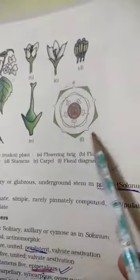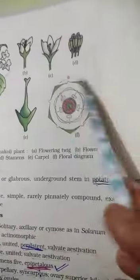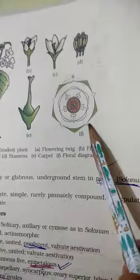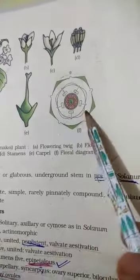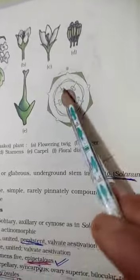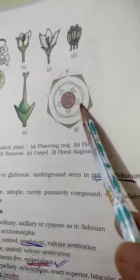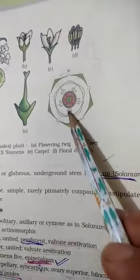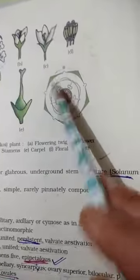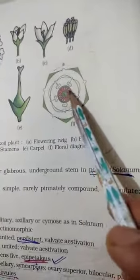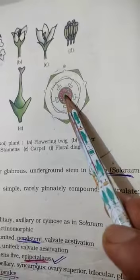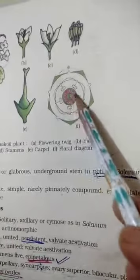This is its floral diagram. These are the calyx which are united, gamosepalous condition. These are petals, gamopetalous condition. These five are stamens, and they are joined with petals, so epipetalous condition is shown. And then this is gynoecium, bicarpellary, placentation is axile, syncarpous means united.